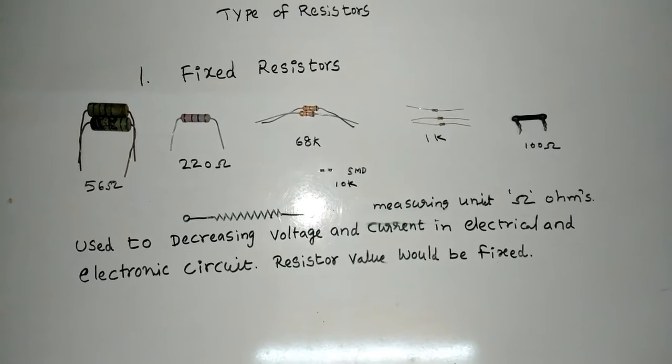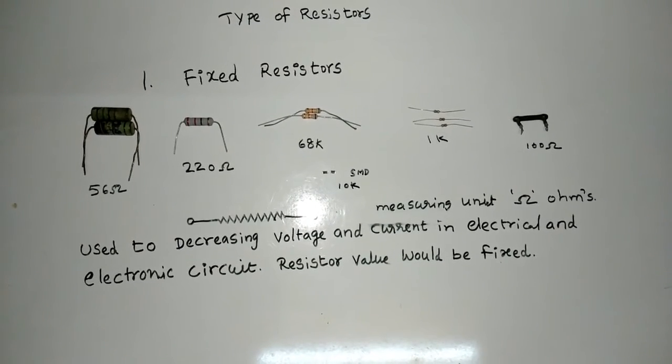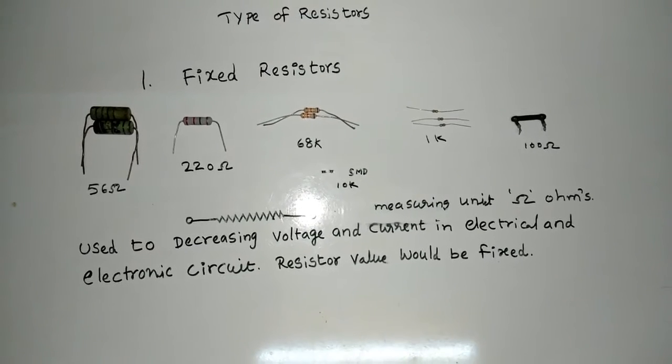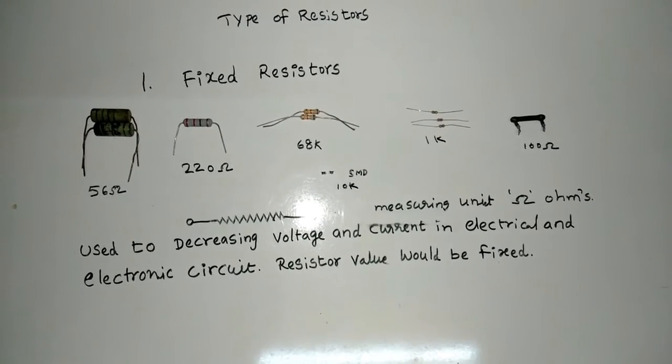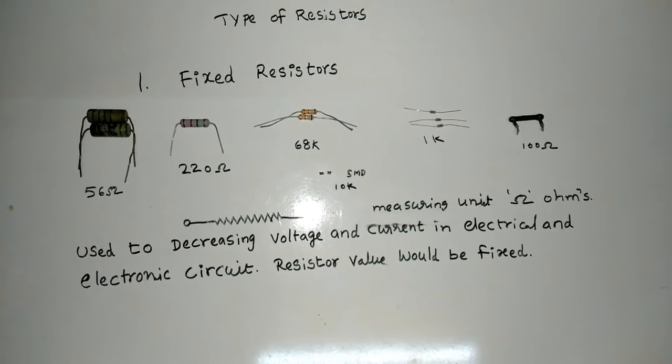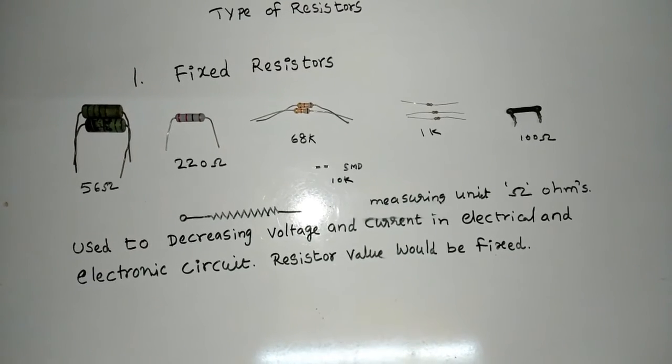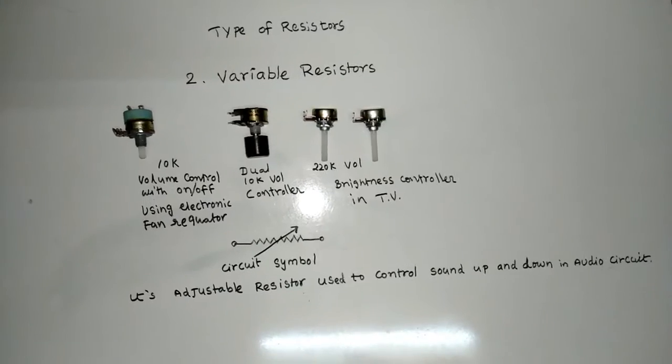Number 1: Fixed Resistors. Measuring unit is ohms. Used to decrease voltage and current in electrical and electronic circuits. Resistor value would be fixed.